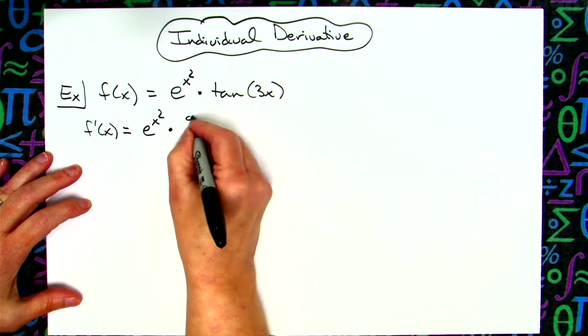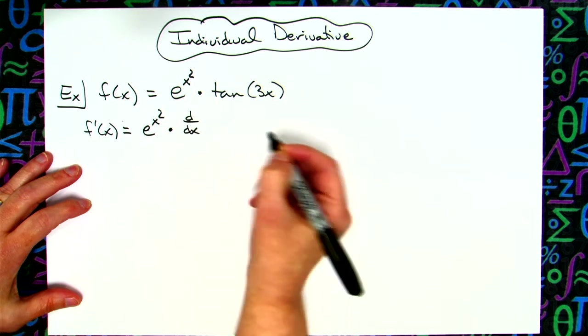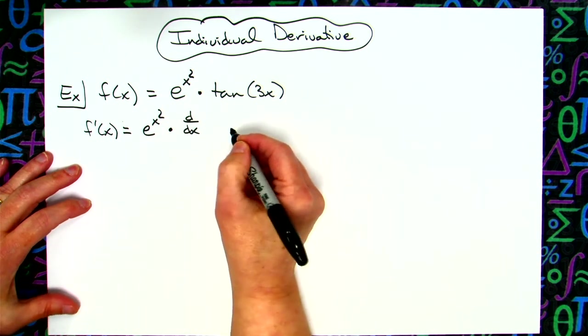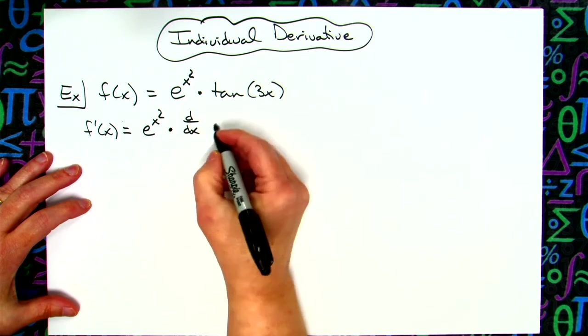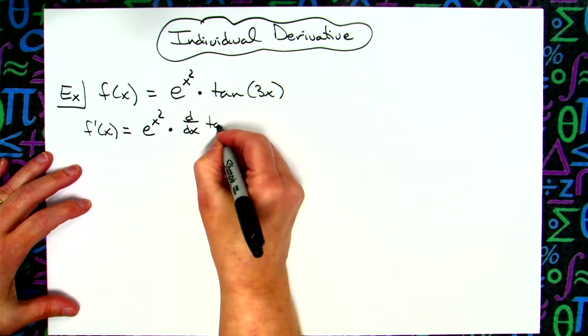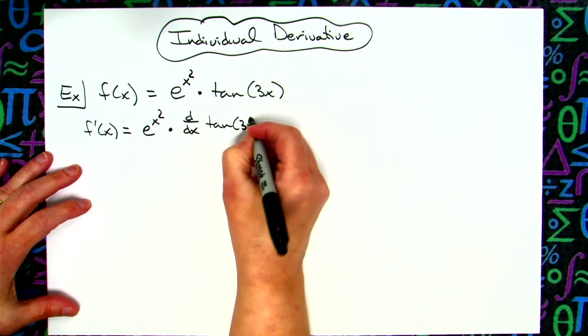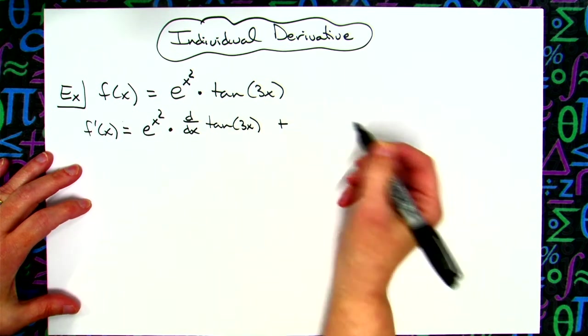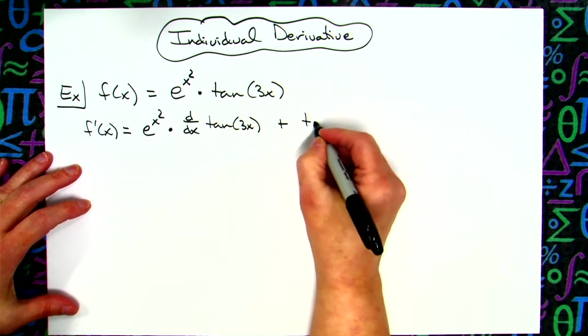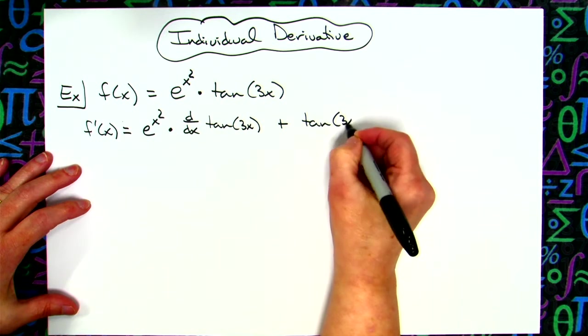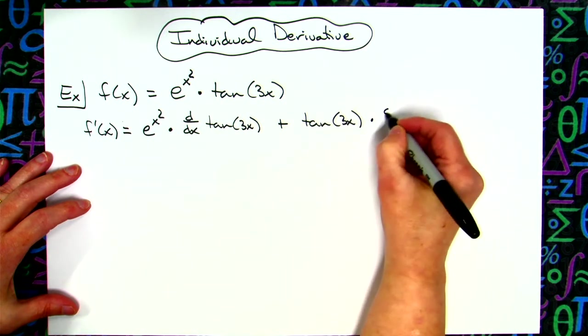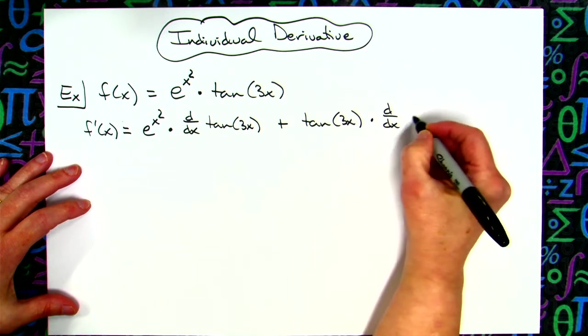So if we want to utilize that d dx notation, many beginning Calc 1 students will do this. Leave the first one times the derivative of the second. We'll not actually take the derivative in this step, we'll just show that we're going to do this with our product rule. We leave the second function alone, and then we take the derivative of the first function.